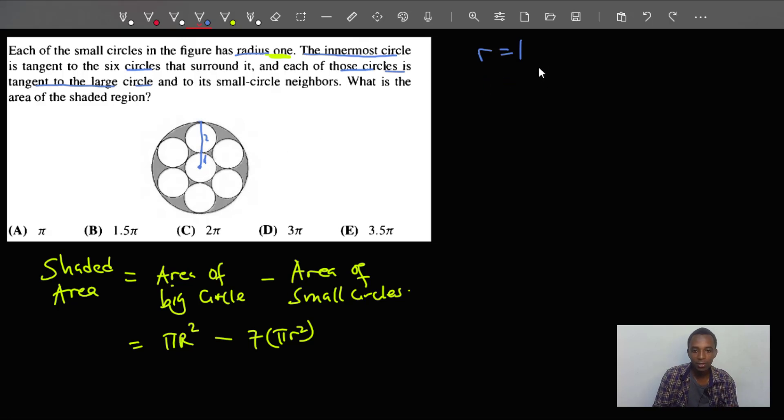So the radius of the big circle is three units. Okay, yeah, you can take this or this or this, each one that you like. So let's calculate the shaded area now. We'll have pi times three squared minus seven times pi times small r squared, that's one squared.